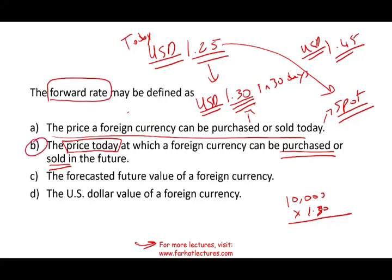Let's make sure the other options are incorrect. Option C: the forecasted future value of a foreign currency. You can forecast as much as you want, but no one is going to buy and sell you currency based on something called a forecasted rate. Option D: the US dollar value of a foreign currency — that's the exchange rate, not the forward rate. So the answer is B.